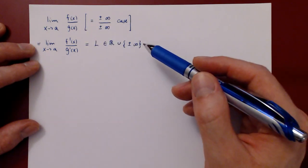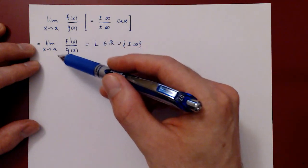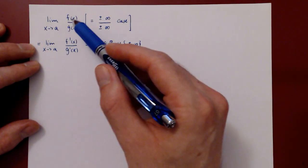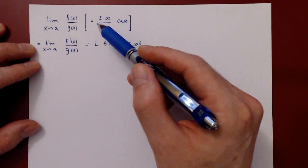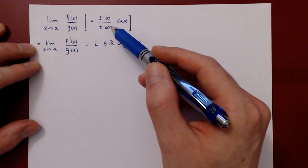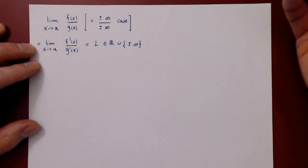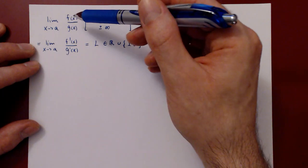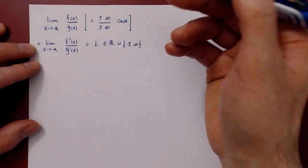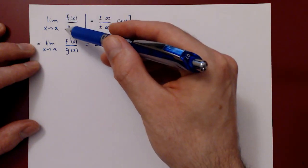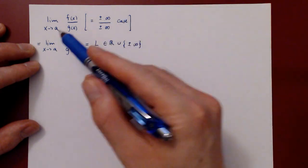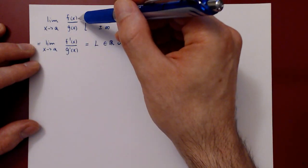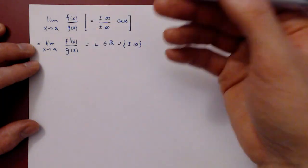Here's a quick intuition to see why this is not a totally ludicrous result. As x gets closer and closer to a, assuming both are positive, both f and g are getting larger and larger. How large? Arbitrarily large. So when considering the ratio of f over g and trying to figure out what this fraction will be approaching as x gets closer to a, the fundamental question is: which function is growing more rapidly?